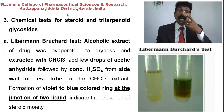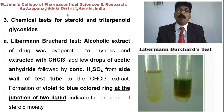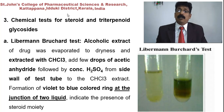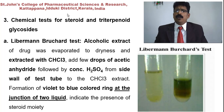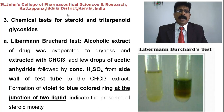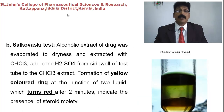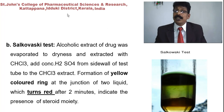Liebermann–Burchard test for steroid and triterpenoid glycosides: the alcoholic extract of the drug is evaporated to dryness, then extracted again with chloroform (CHCl₃). A few drops of acetic anhydride are added, followed by concentrated sulfuric acid along the sides of the test tube. Formation of a violet to blue color ring at the junction of the two liquids indicates the presence of a steroid moiety.